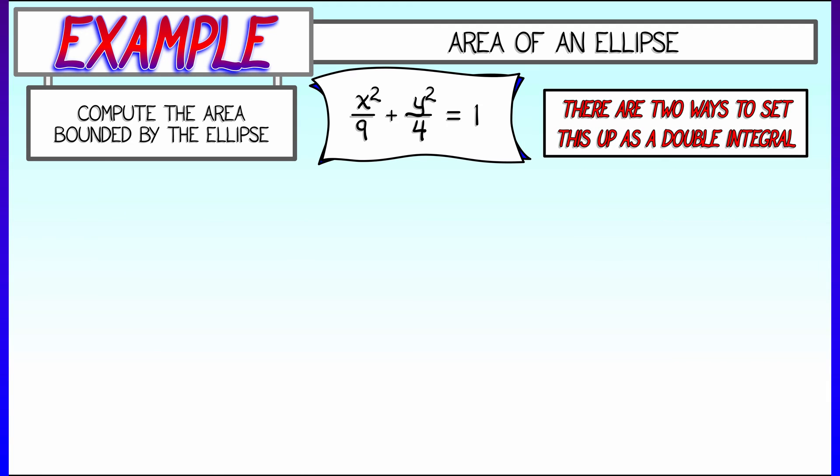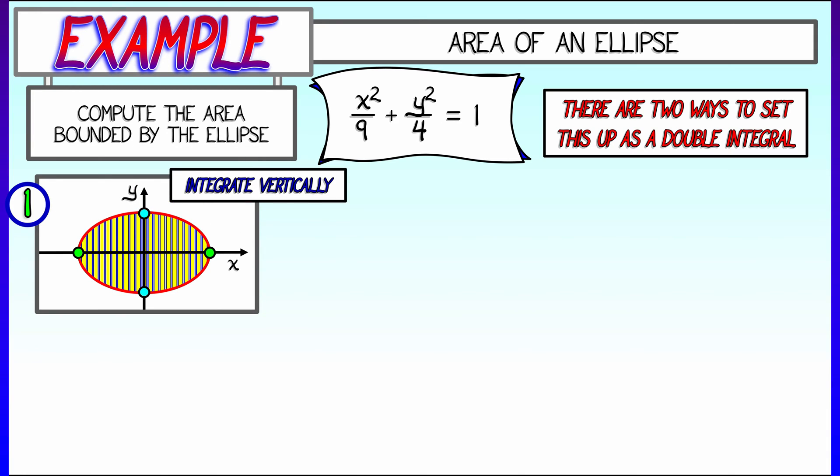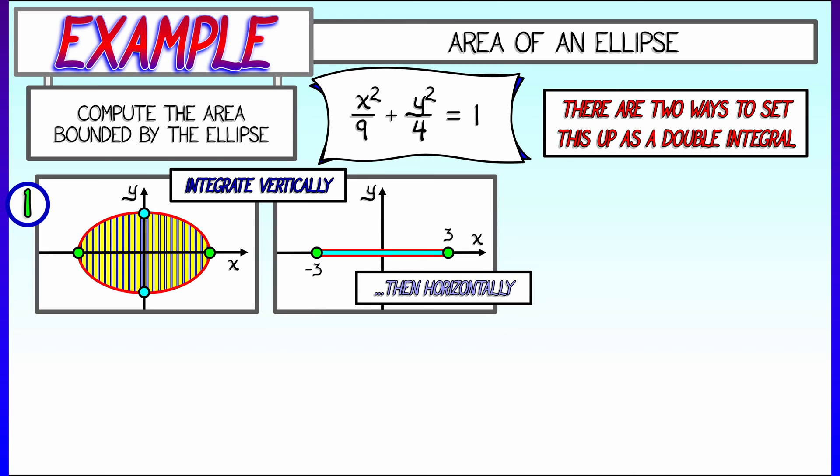Now there are two ways that we could set this up as a double integral. The first way involves integrating in the vertical direction first. So we fix a value of x and then integrate in y, and then, after we do that, we integrate horizontally in the x direction. Now such an approach would involve writing that double integral in terms of an integrand that equals dy dx in that order.